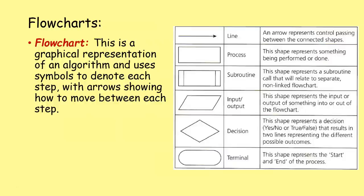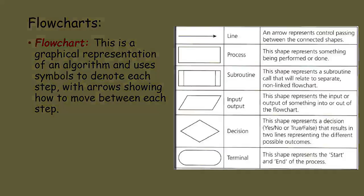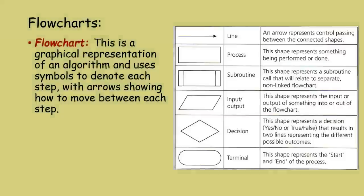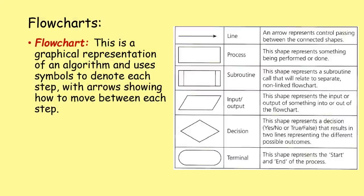A flow chart, sometimes called a flow diagram, is a graphical representation of an algorithm. It uses symbols to denote each step with arrows showing how to move between each step. You do need to learn these symbols - you can't get the shapes wrong in a flow chart. You need your line, your process, your subroutine, your input, your output, your decision, and your terminal symbols correct.